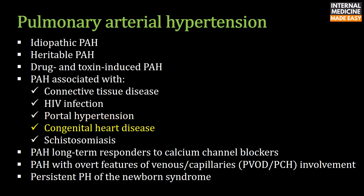In some congenital heart diseases, there is increased vascular tone resulting from an imbalance between vasodilators and vasoconstrictors, so-called pulmonary endothelial dysfunction. Schistosomiasis-associated pulmonary hypertension is related to parasite egg embolization of the pulmonary arteries, pulmonary arteriopathy, and high-flow states of the pulmonary arteries.